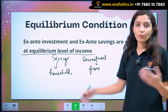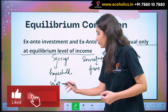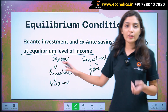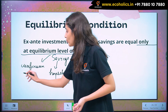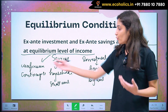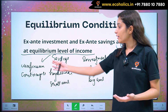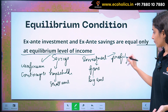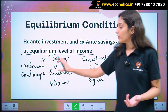Savings happen on a smaller amount, and investment happens on a comparatively bigger amount. The objective behind savings is for unforeseen contingencies — meaning unforeseen events like illness or unemployment. The simple objective of investment is profit. Because savings and investment are done by two different categories of people and they have different objectives.